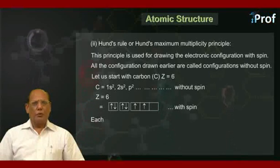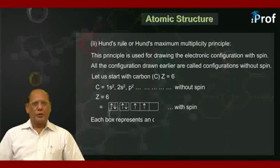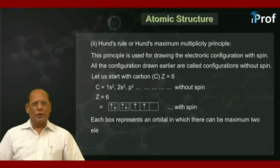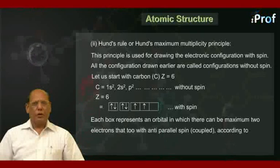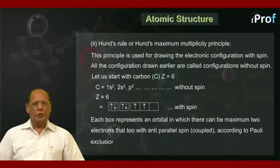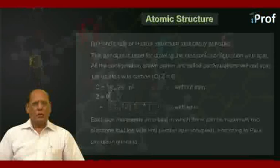Each box represents an orbital in which there can be maximum 2 electrons with anti-parallel spin, or coupled, according to Pauli Exclusion Principle.